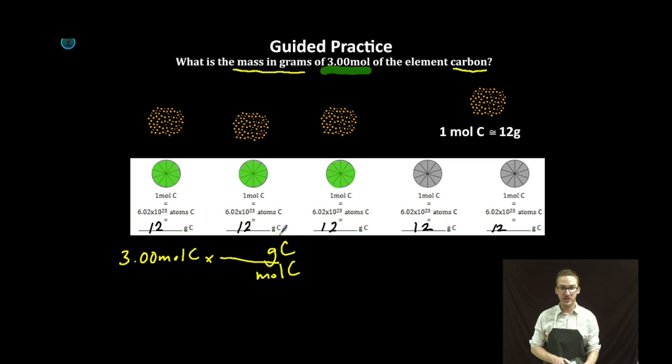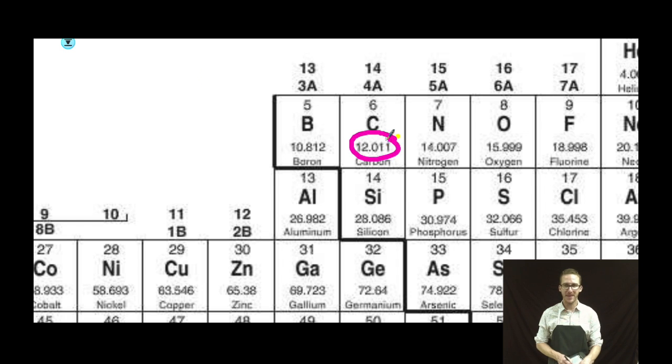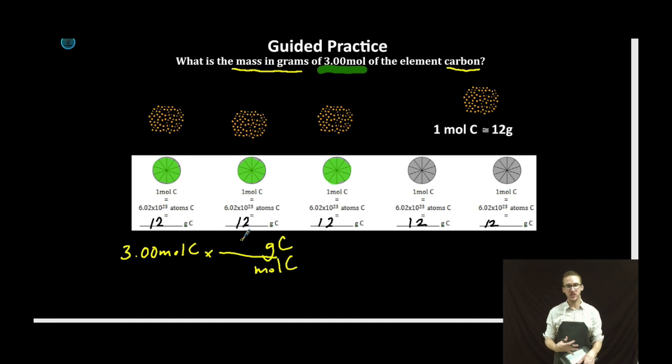Now, where do we get the relationship between grams and moles for an element? Boom! Periodic table. Molar mass. I'm going to estimate here, which I encourage you to do. I'm going to use 1 mole of carbon is approximately 12 grams. Therefore, 3 moles of carbon is approximately 36 grams.